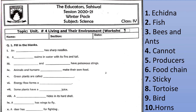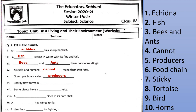Question number one: Fill in the blanks. First, an echidna has sharp needles. Second, a fish swims in water with its fins and tail. Third, bees and ants have poisonous stings. Fourth, animals and humans cannot make their own food. Fifth, green plants are called producers. Sixth, energy flow forms a food chain. Seventh, some plants have sticky juice. Eighth, a tortoise hides in its hard shell. Ninth, a bird has wings to fly. Tenth, a deer has horns for fighting.